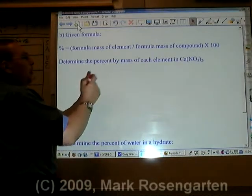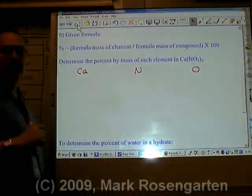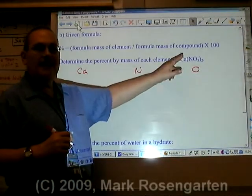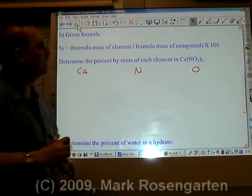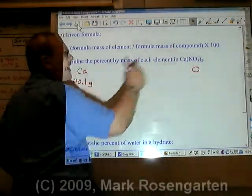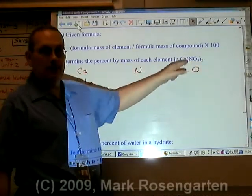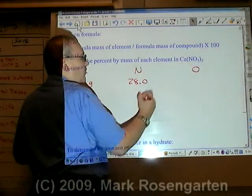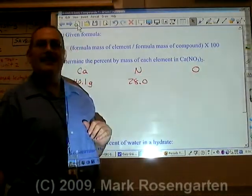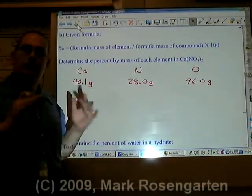We want to find the percent composition of calcium, nitrogen, and oxygen in this compound. First, look up the total mass that each element contributes to the formula mass. Calcium has an atomic mass of 40.1 grams and there's only one calcium. Nitrogen weighs 14.0 and there's two of them, so 2 times 14 is 28.0. Oxygen weighs 16.0 each, there's six of them, so 6 times 16 is 96.0.